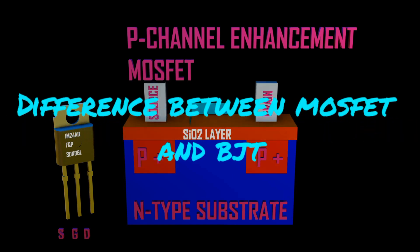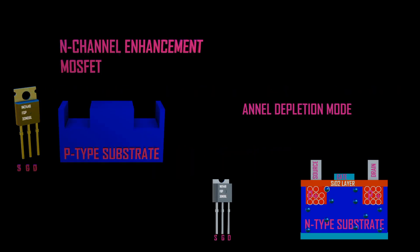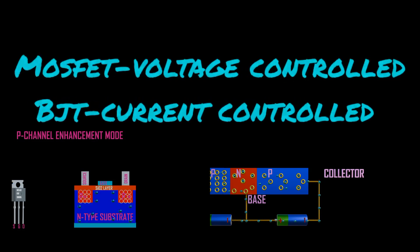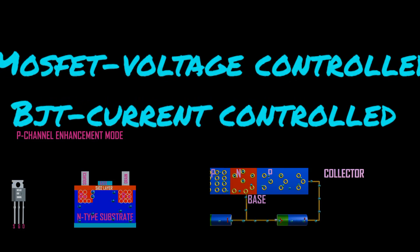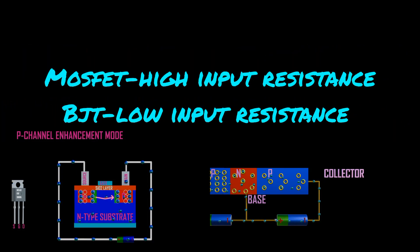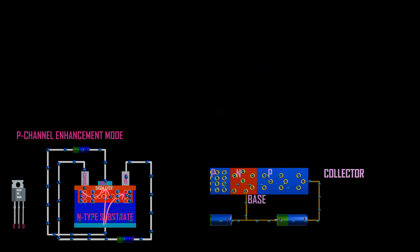Difference between BJT and MOSFET: 1. MOSFET is N-type and P-type while BJT is NPN and PNP. 2. MOSFET is voltage controlled while BJT is current controlled. 3. MOSFET has high input resistance while BJT has low input resistance. 4. MOSFET is used in high current applications.